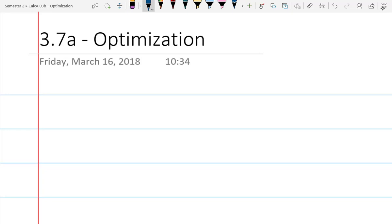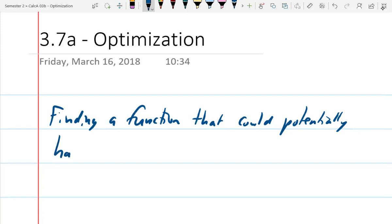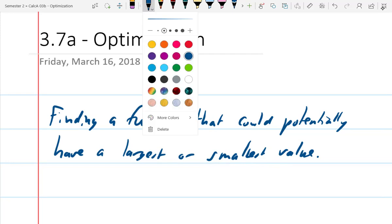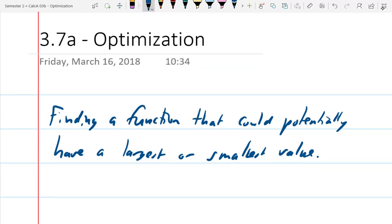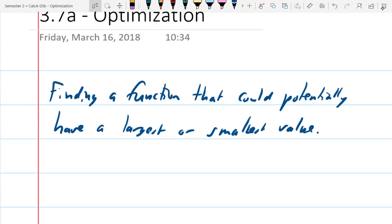So what these are about is finding a function that could potentially have a largest or smallest value. How would you determine where that largest or smallest value is? Yeah. You take a first derivative. You're looking for these to be located at turning points.